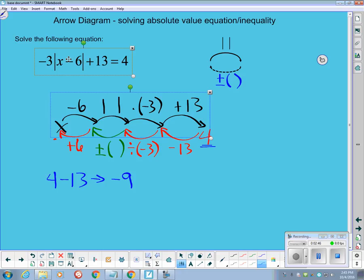Our next thing is to divide by negative 3, and that gives us a 3. I then generate a plus or minus 3, and then I'm going to add 6 onto my plus or minus 3.